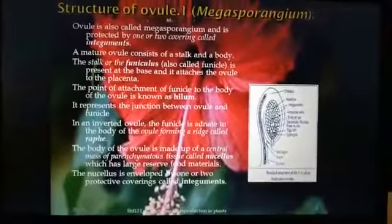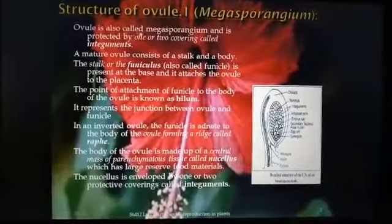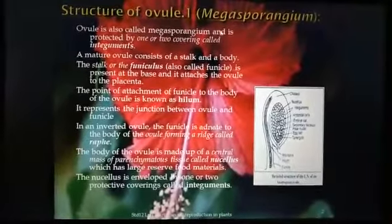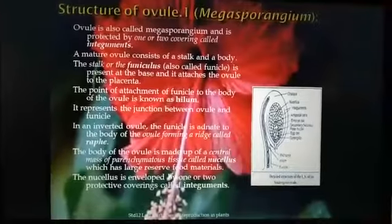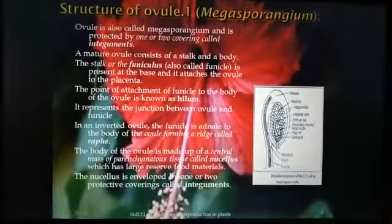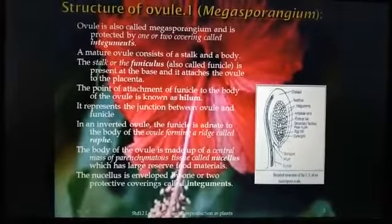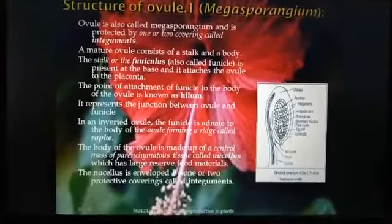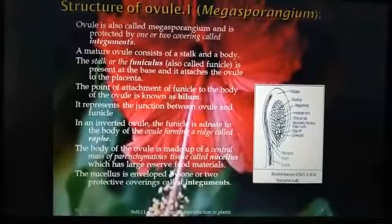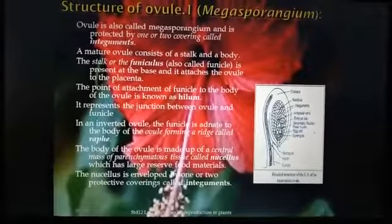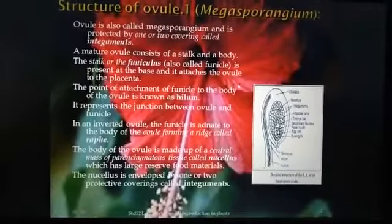The next topic is the structure of ovule or megasporangium. The ovule is also called megasporangium and is protected by one or two coverings called integuments. The ovules are protected by an outer integument and an inner integument — these are the protective wall layers covering the body of the ovule.